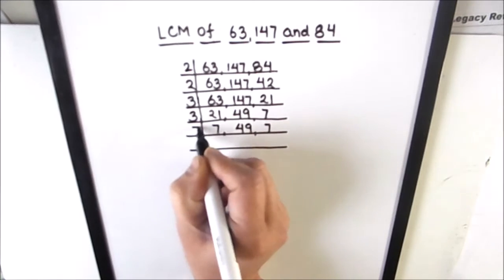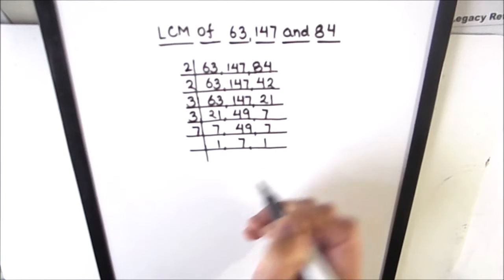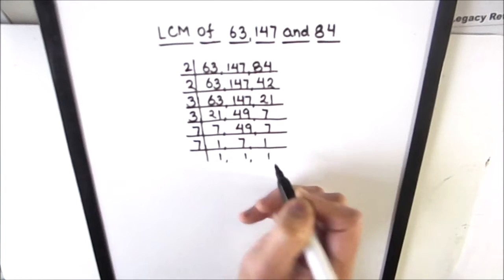7 times 1 is 7, 7 times 7 is 49, and 7 times 1 is 7. 7 is a prime number, it is only divisible by 7. 7 times 1 is 7.